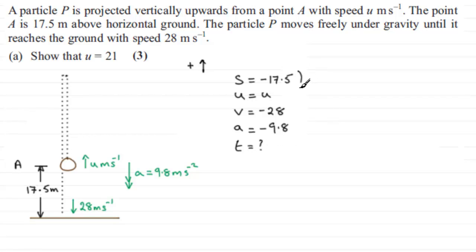The one that we need is v squared equals u squared plus 2as, a formula that you should be familiar with. If that's the case, we've therefore got v, which is minus 28, all squared. You need to put that in brackets if you're doing that.